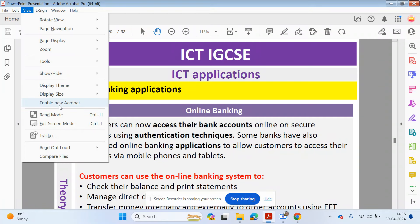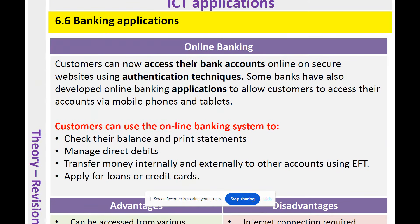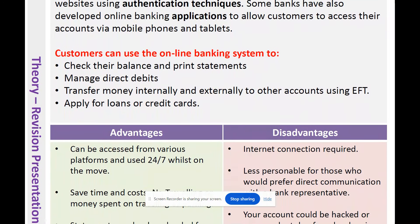Let me zoom in so you can see the content a little more clearly. Online banking is basically a method to allow customers to access their bank account details on an online platform — either on a website or using a banking application. To access your banking details, the website or application will use authentication techniques. Maybe you need to type in a code, or there's two-factor authentication where a code is sent to your phone and you enter that number to log in.